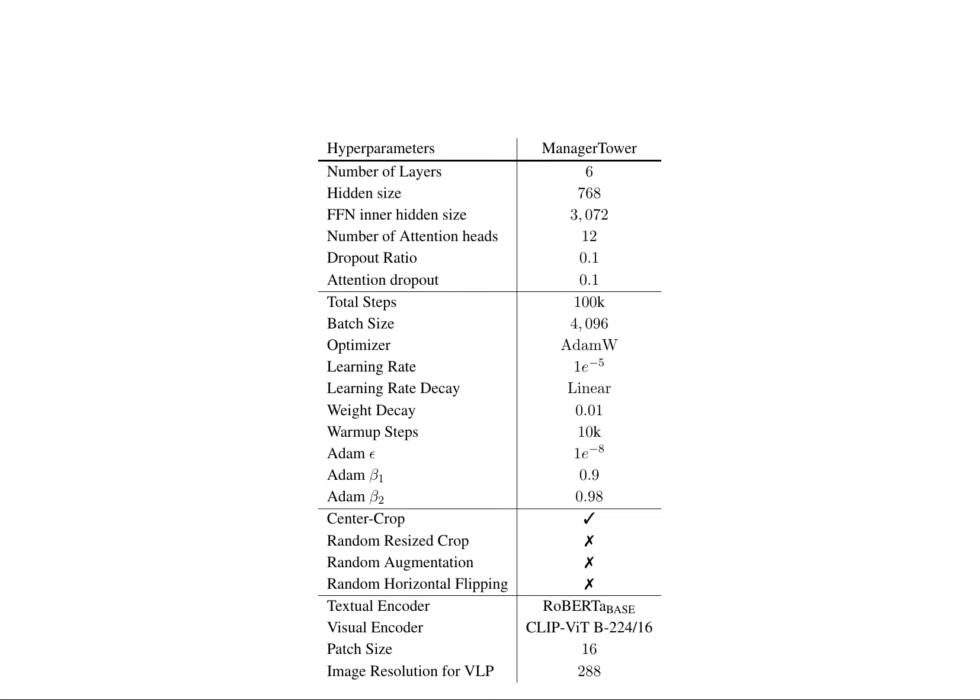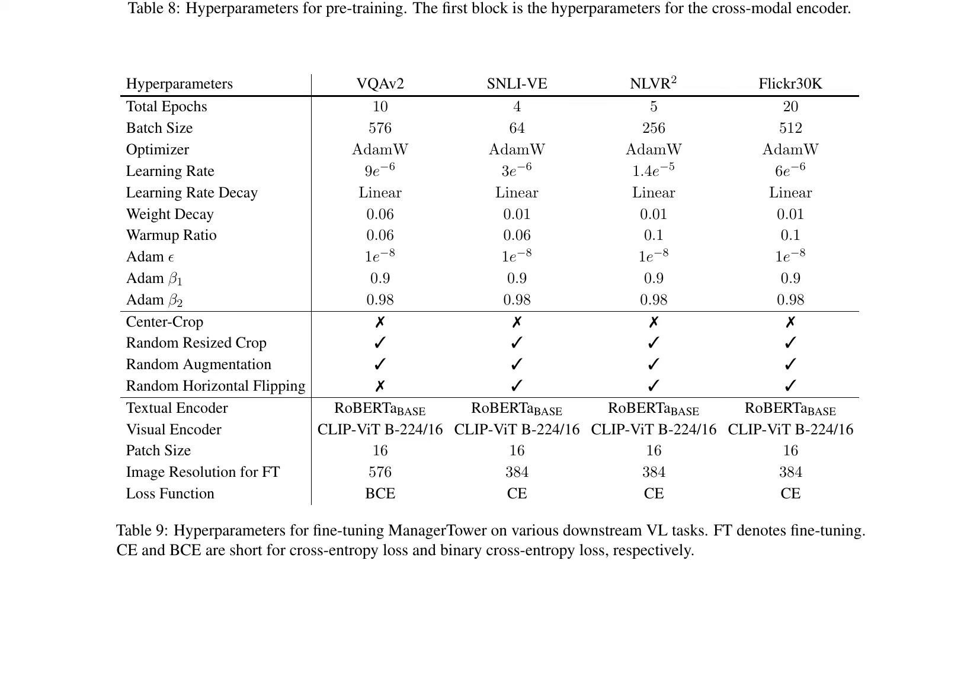The center crop augmentation is enabled during pre-training, while random resized crop, random augmentation, and random horizontal flipping are disabled. The textual encoder is RoBERTa-base, and the visual encoder is CLIP-ViT-B/16 with a patch size of 16. The image resolution for visual language pre-training is set to 288. For fine-tuning on various downstream visual language tasks, the hyperparameters are adjusted accordingly, with total epochs, batch size, optimizer, learning rate, and learning rate decay being task-specific, as shown in Table 9.